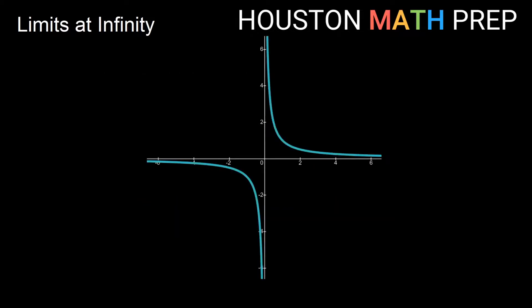Let's look at a bunch of cases. Here I have a graph — you'll notice it does approach a horizontal asymptote. This is the graph of y equals 1 over x. When we look at this, we say: what is the limit as x approaches infinity? As we go further and further out to the right on the graph, it looks like we're getting closer and closer to the x-axis, which is a y value of 0, so this limit is actually 0.